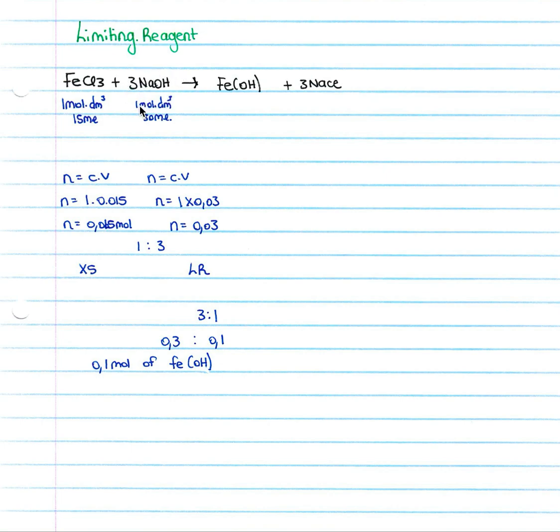We then calculate how many moles we have of each of the reactants. Turns out that we have 0.015 moles of FeCl3 and 0.03 moles of NaOH. Now we know that the mole ratio, this is a balanced equation so we can equate our moles, we have one mole to three moles.